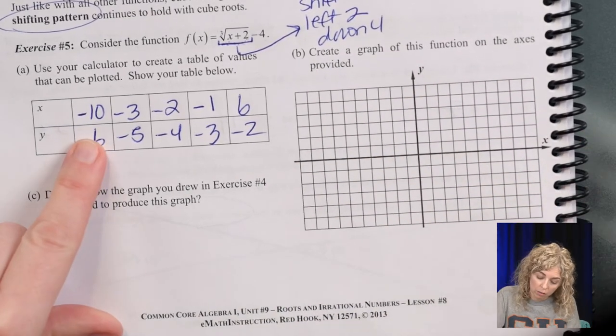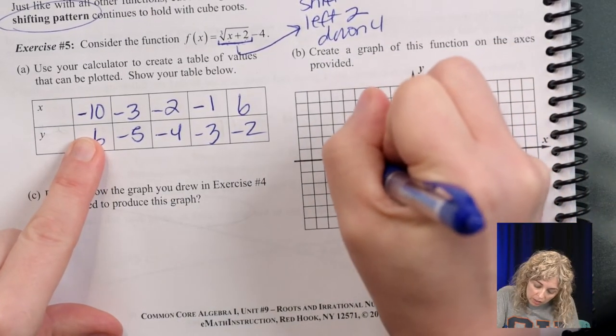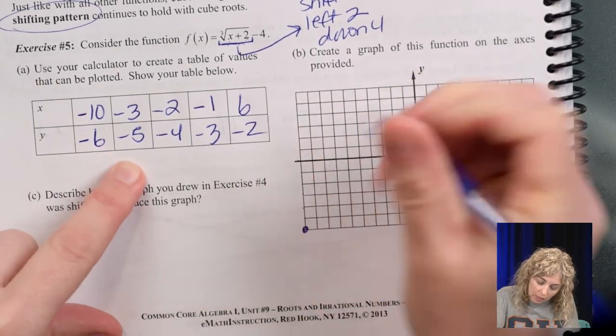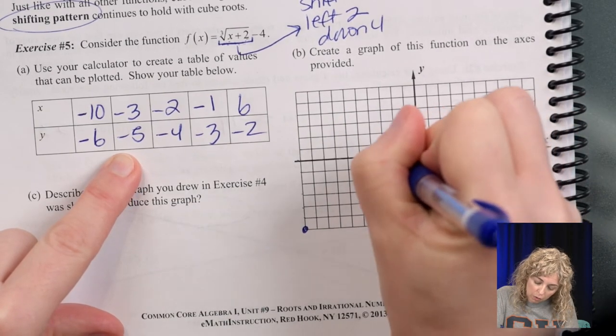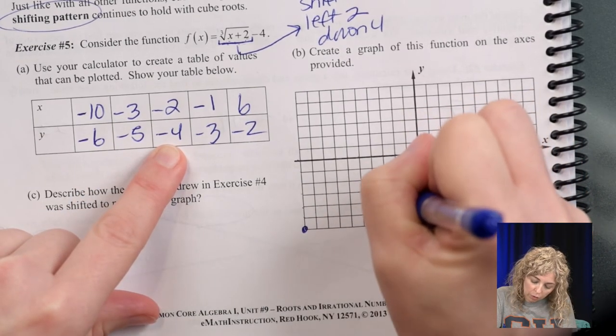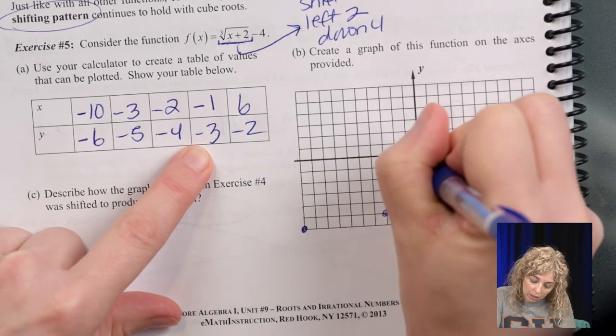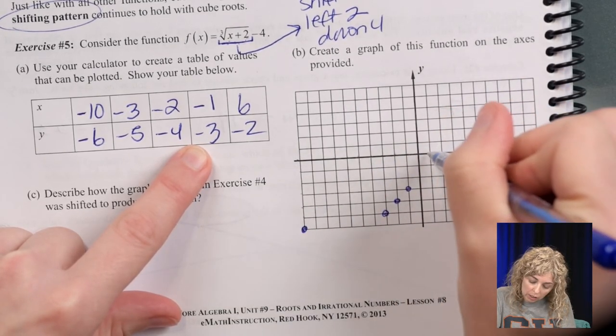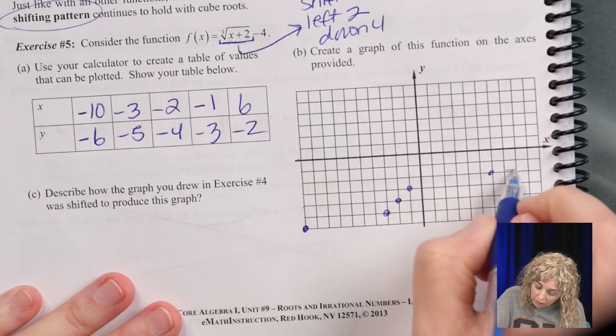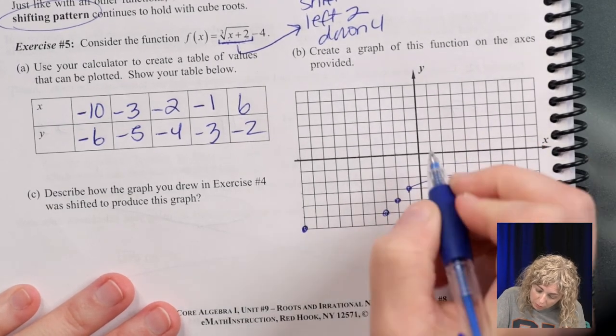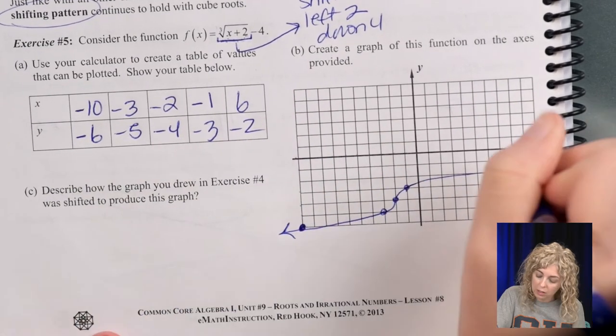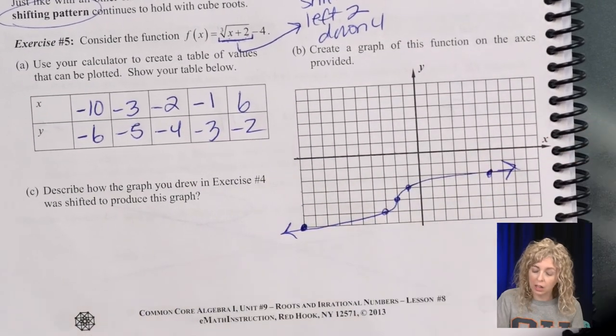So let's graph it. Left 10, down 6. Left 3, down 5. Left 2, down 4. Left 1, down 3. Right 6, down 2. So let's try our best again to make that S. Curve around and down. And then just make the dots a little bigger with arrows at the end because it keeps going.